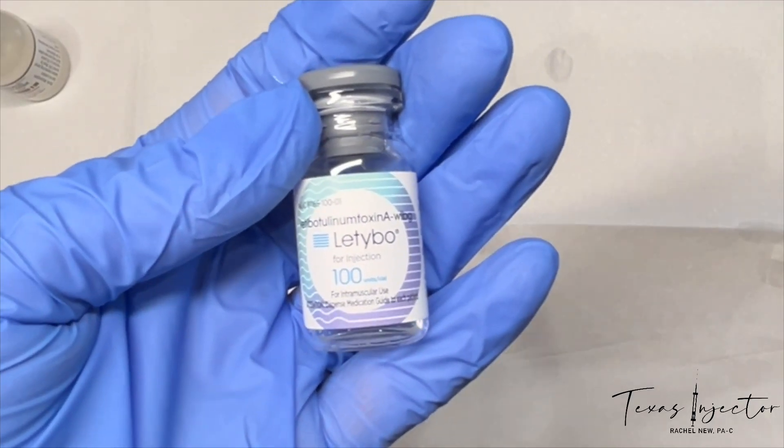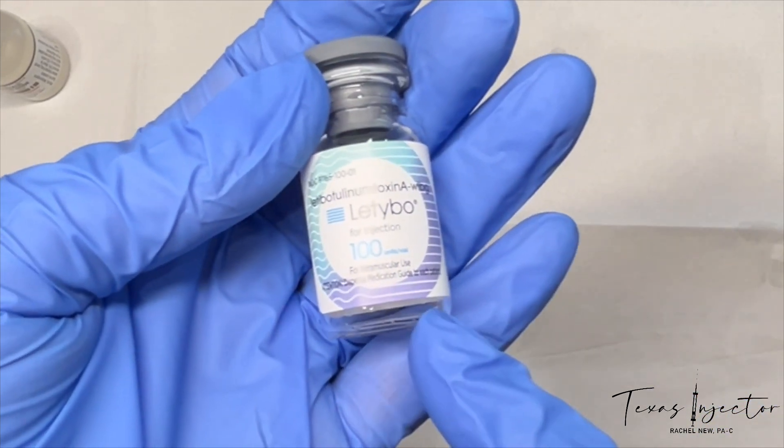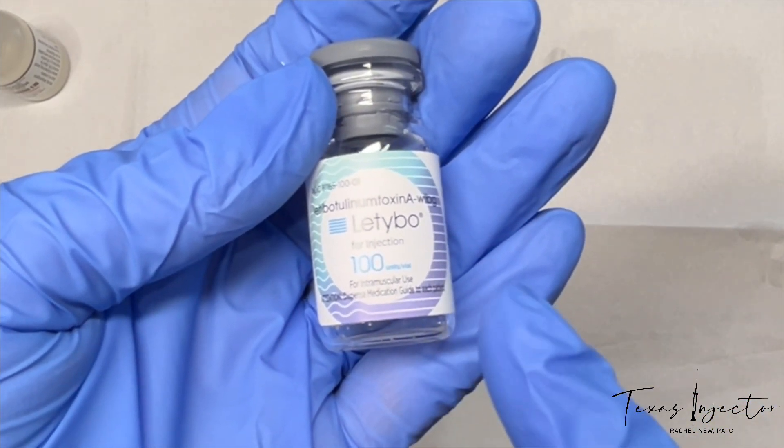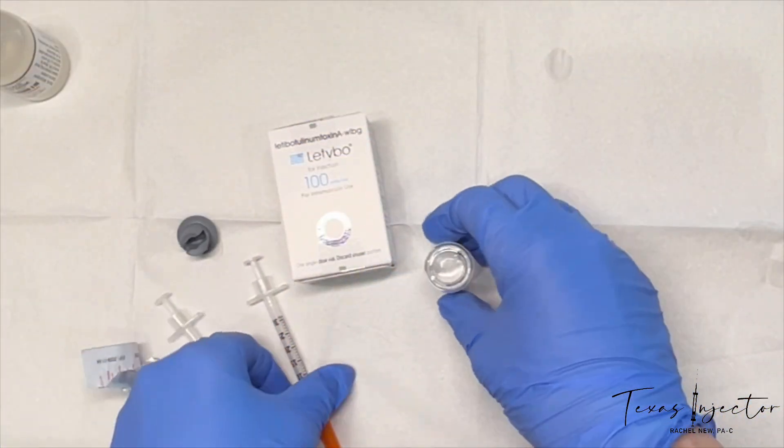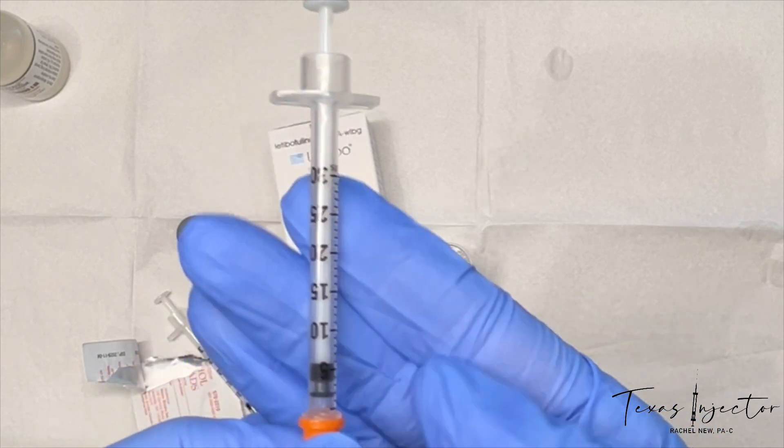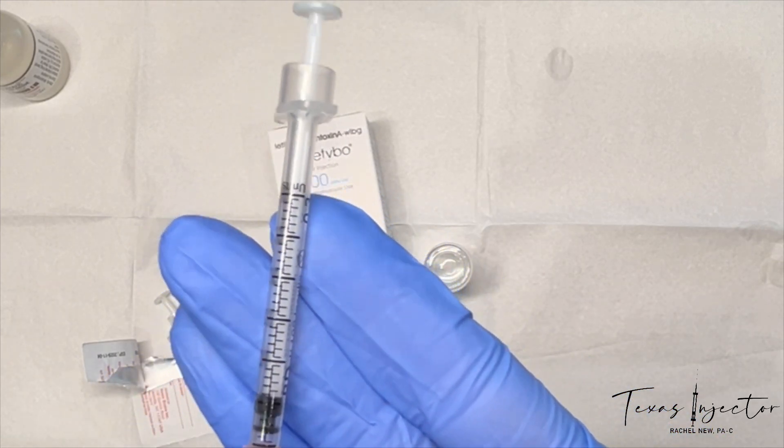Now that we have added 2.5 ml of the bacteriostatic sodium chloride to the 100-unit bottle of Latibo, let's draw it up so we get an idea of how to dose this. I have a 30-unit insulin syringe.